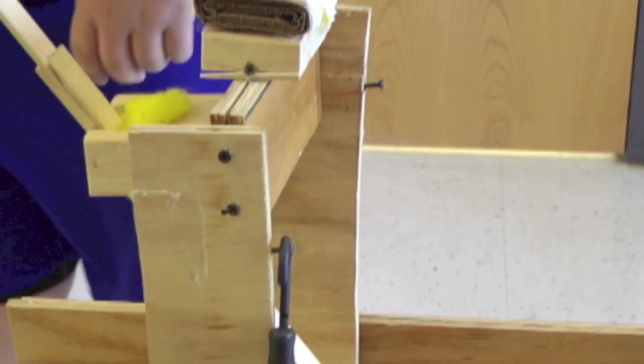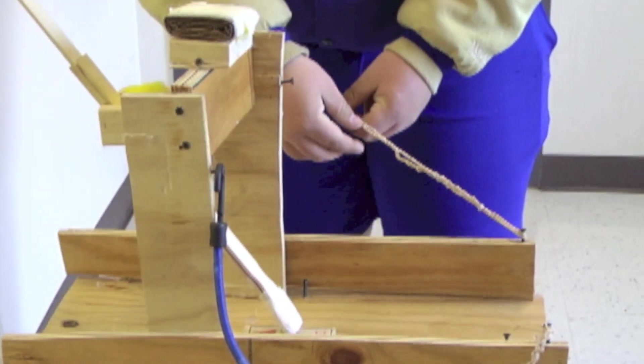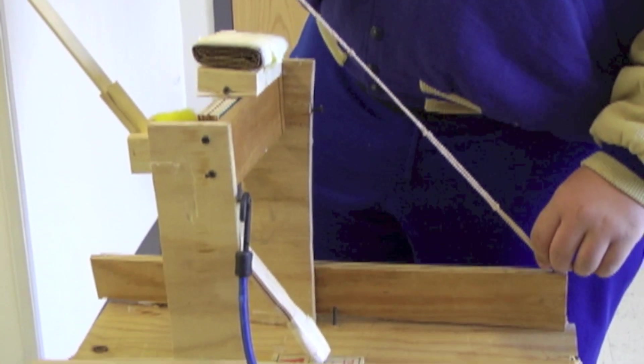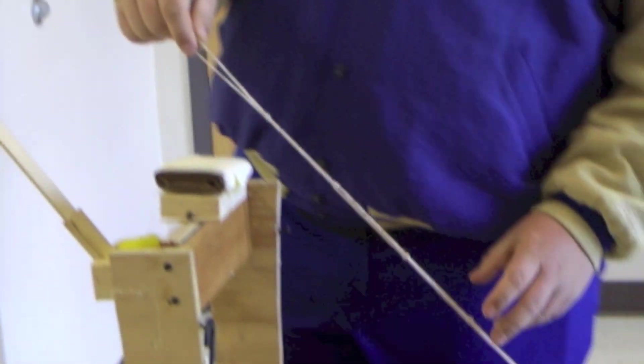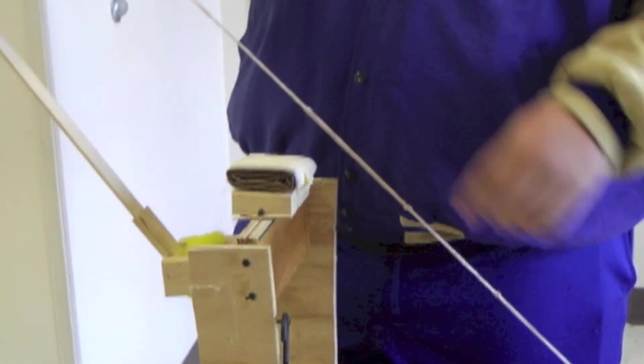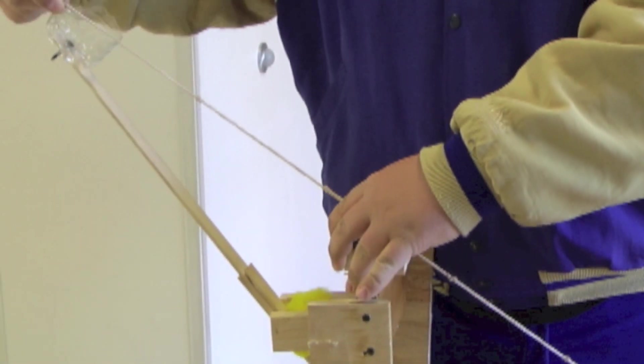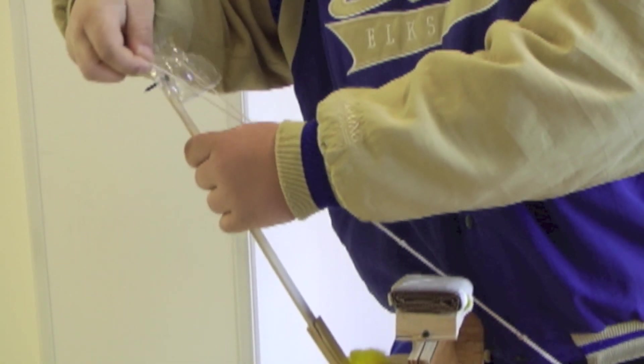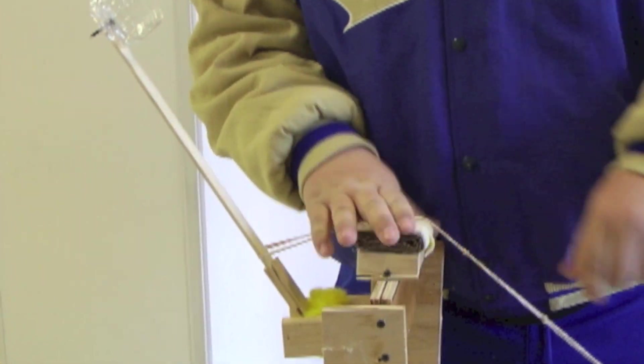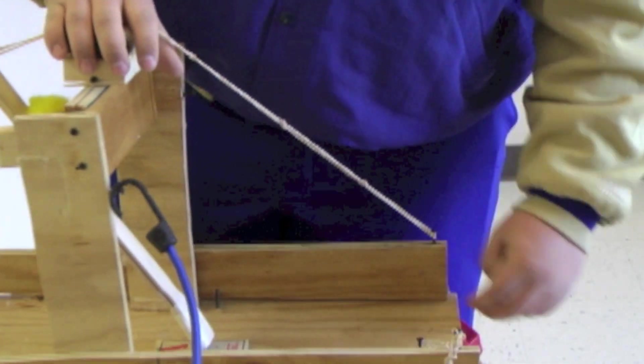And then we quadrupled four rubber bands. We had five sections of rubber bands. Then we put it on top of the tension thing.